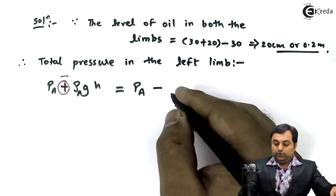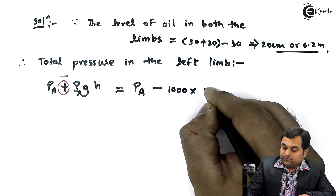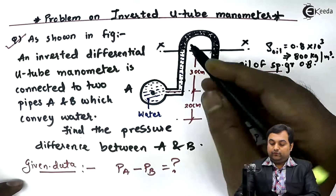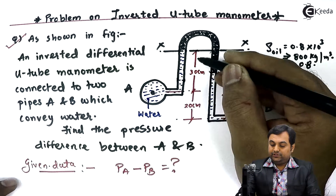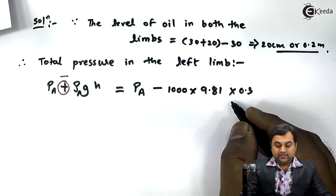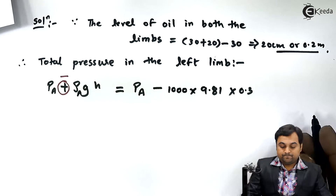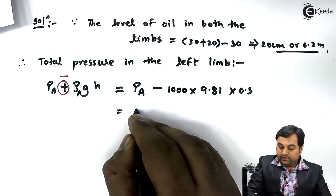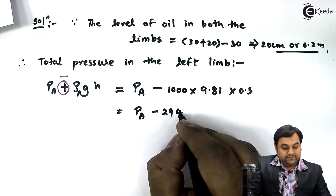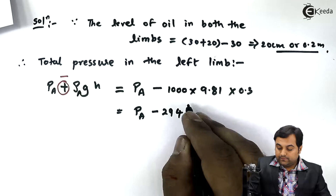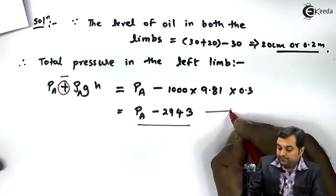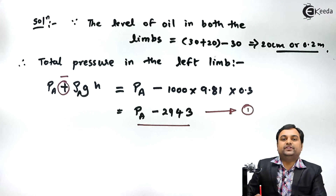Pressure at point A minus the density of water (1000 kg/m³) into g (9.81) into the height of water in the left limb (30 cm = 0.3 m). Calculating this: 1000 × 9.81 × 0.3 = 2943. So total pressure in left limb equals P_A − 2943. This is equation number one.